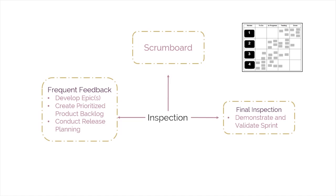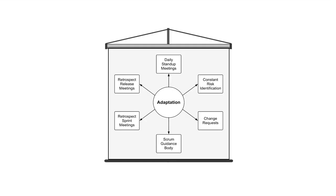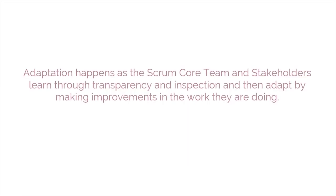The third main characteristic of empirical process control is adaptation. Adaptation happens as the Scrum core team and stakeholders learn through transparency and inspection, and then adapt by making improvements in the work they are doing.